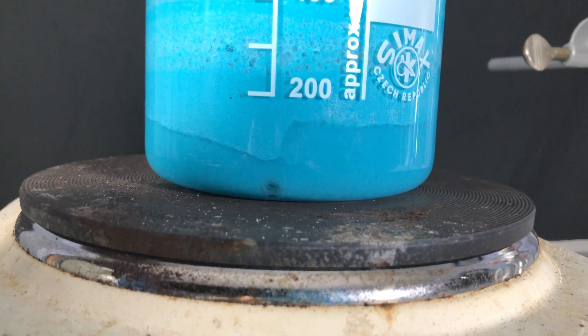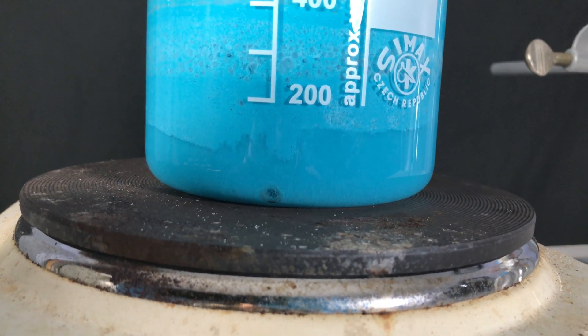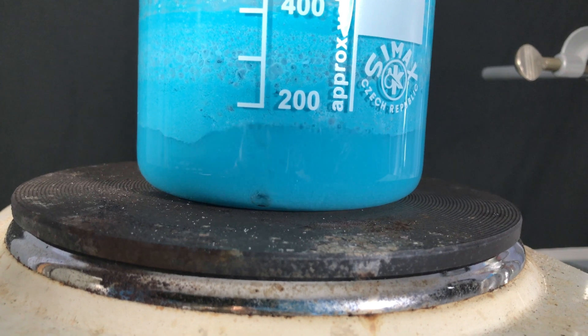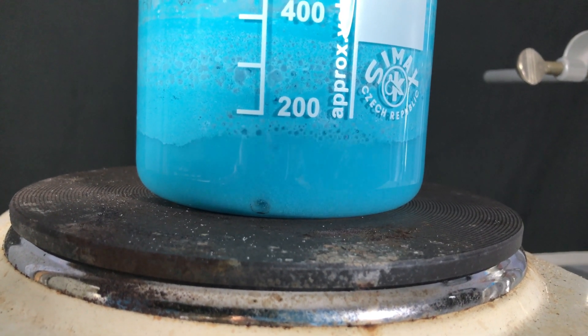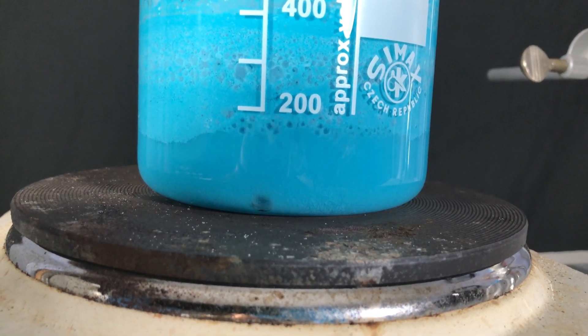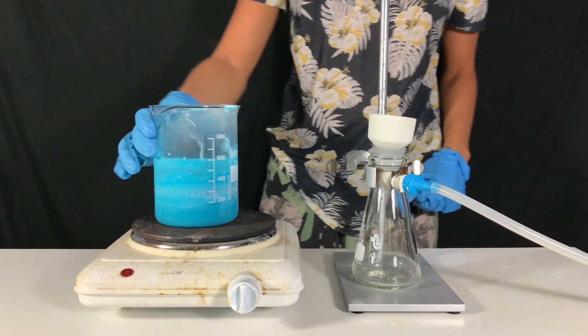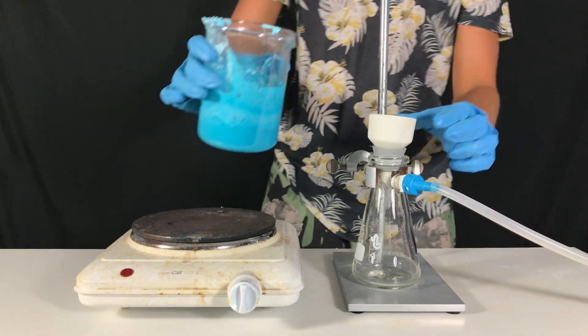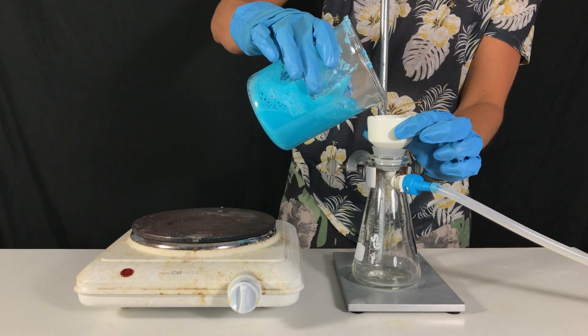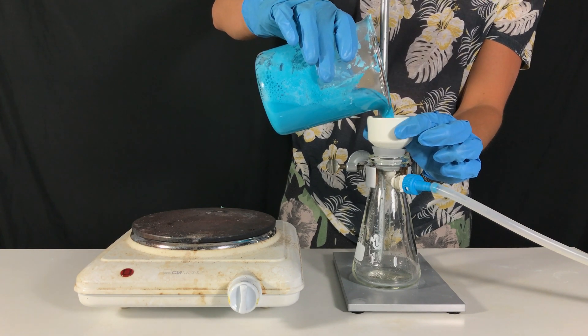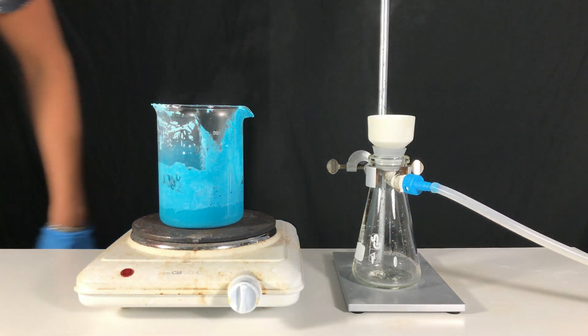The copper benzoate formed quite interesting patterns while being heated. A second vacuum filtration was performed while everything was still hot. Our goal here is to get rid of as much of the sodium sulfate that was formed in this reaction.